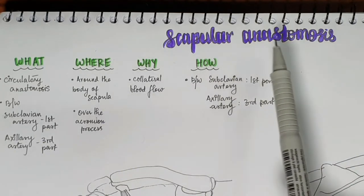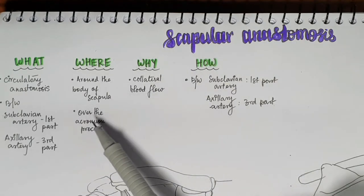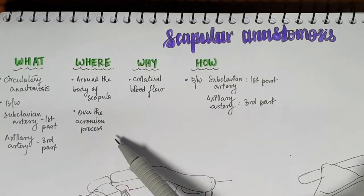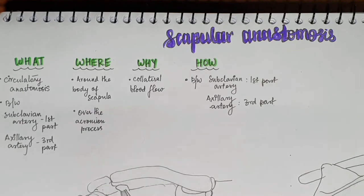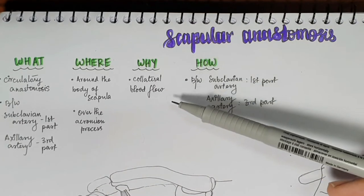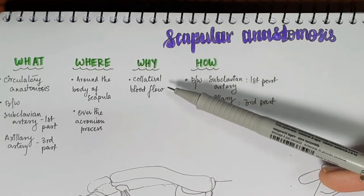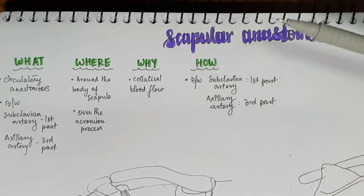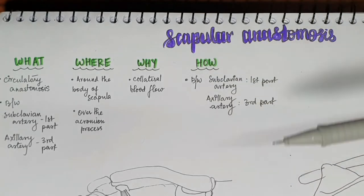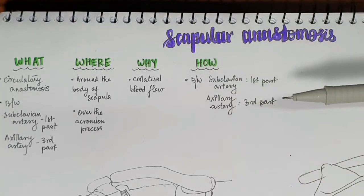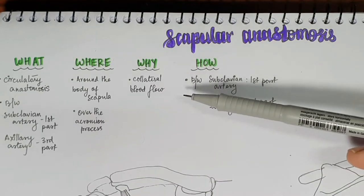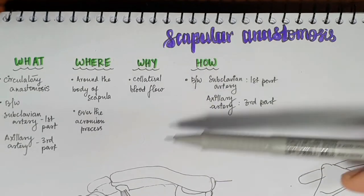The scapular anastomosis lies around the body of the scapula and also over the acromion process. It provides collateral blood flow like any other anastomosis, so in case of an occlusion or damage to any of the vessels, it will maintain the blood flow in the scapular region.